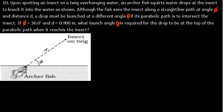In this tutorial we are going to solve a very interesting question under Projectile Motion. Upon spotting an insect on a twig overhanging water, an archerfish shoots water drops at the insect to knock it into the water. Although the fish sees the insect along a straight path at angle phi and distance d, a drop must be launched at a different angle theta. If its parabolic path is to intersect the insect, if phi is 36 degrees and d is 0.900 meters, what launch angle theta is required for the drop to be at the top of the parabolic path when it reaches the insect?